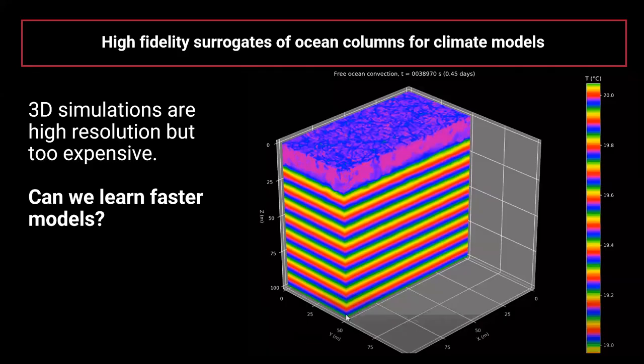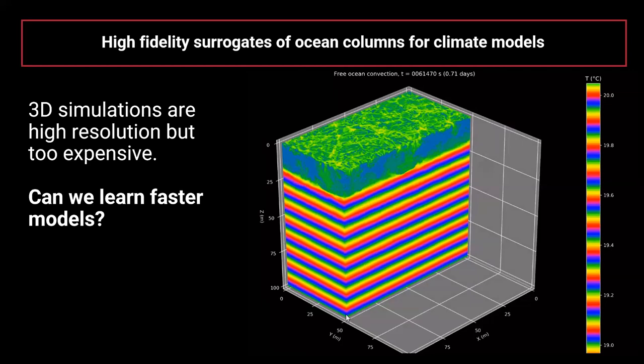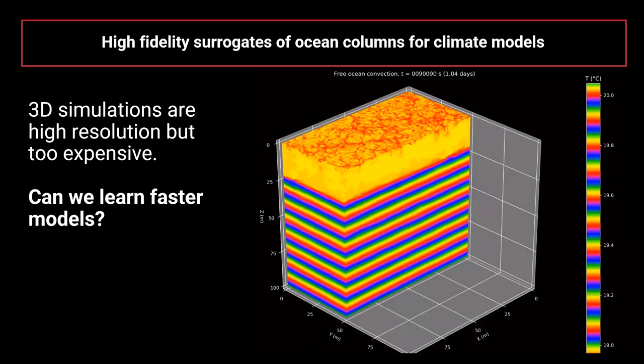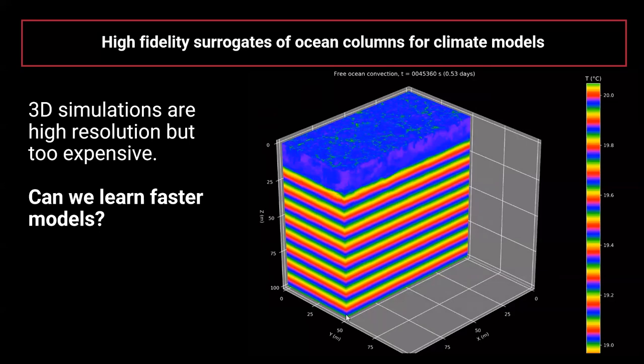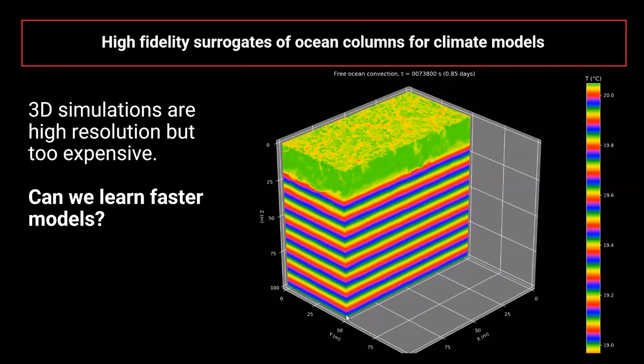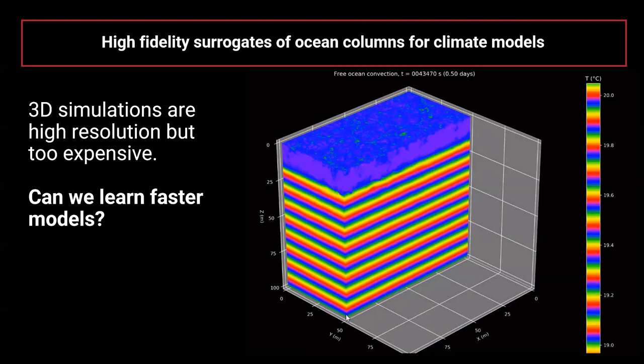One of the main things I've been looking at is high fidelity surrogates of ocean columns. When generating climate models, it comes down to finding how ocean mixing occurs within one voxel, repeated around the earth however many times. You don't really need very high fidelity. We can run these large eddy simulations in 3D, but you can't do that running thousands simultaneously where they're just one piece of the full climate model.